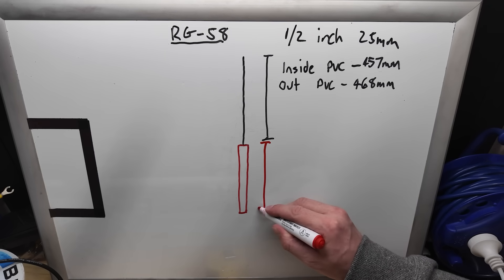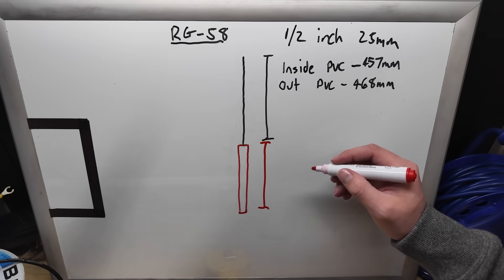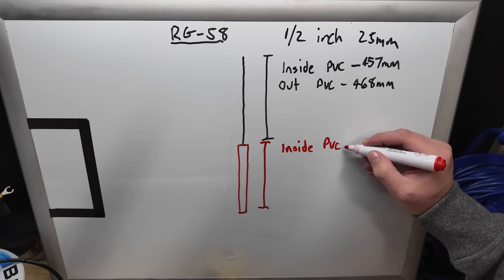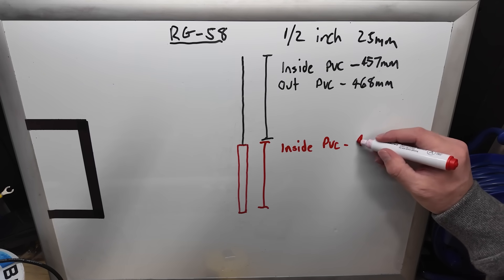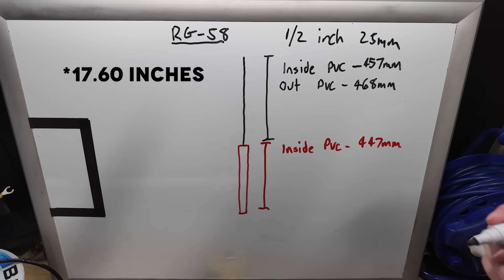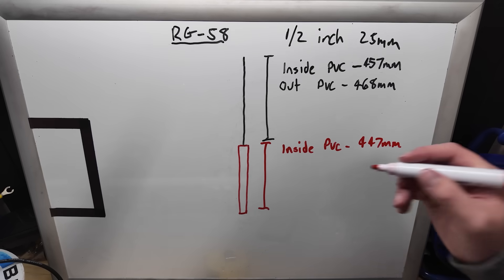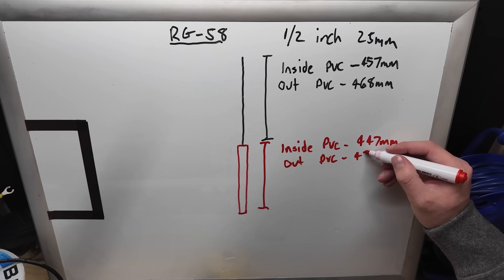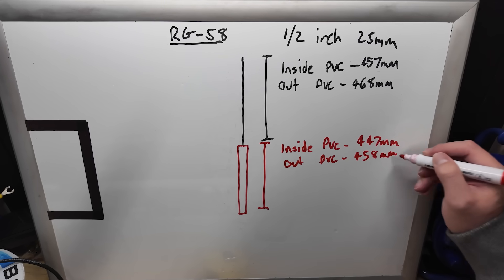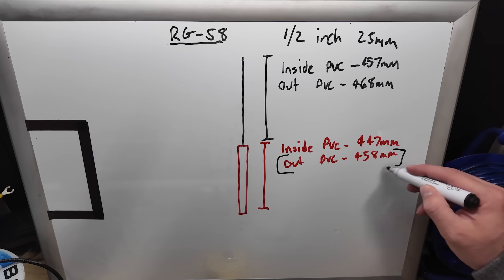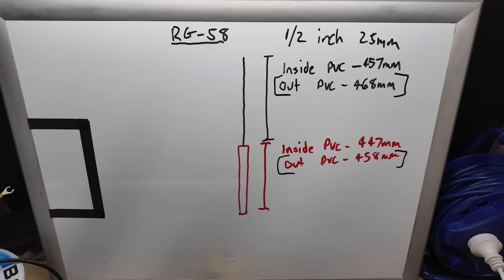Now from where we go to the bottom half of our antenna our measurements do change a little bit. If we want to do it inside the PVC, we're going to use a length of 447 millimetres. And if we want to do the outside, we're going to use a slightly longer length of 458 millimetres. So what I'm going to do is, because I'm going to be mounting mine on the outside, I'm going to be using these particular lengths right here. But you can adjust depending on how you want to actually build this antenna for its final product.